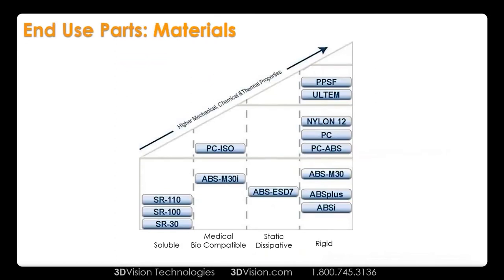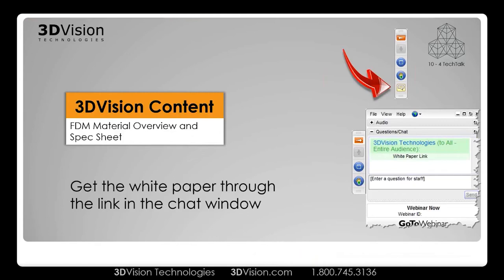Looking at our other available materials on the chart, moving from left to right and up, the chemical, thermal, and mechanical properties increase. The weakest are our soluble supports — good for over-molding or dissolving away later. We also have biocompatible materials and materials that dissipate static electricity. On the far-right chart we have ABS at the bottom — the stuff your kids' Legos are made of — then polycarbonate, nylon, which was new in the last year or two, and then Ultem, which has a higher tensile strength than aluminum and some other metals. We have a white paper with all the FDM materials, what machines they run on, tensile strength, HDT, and everything you need.